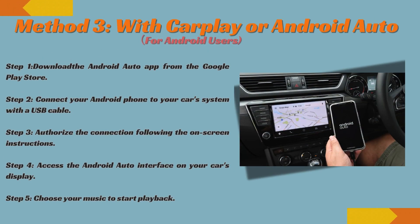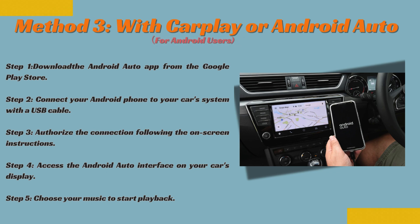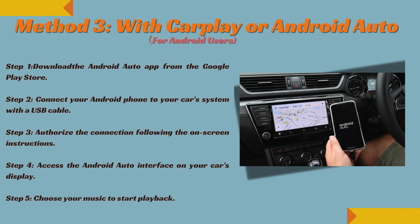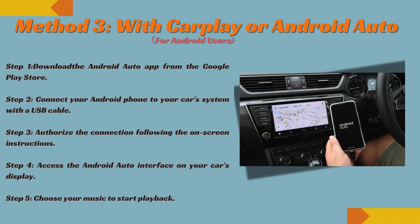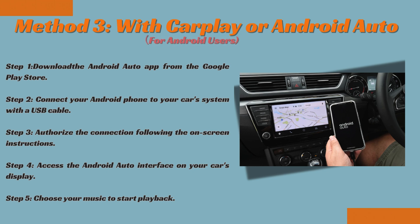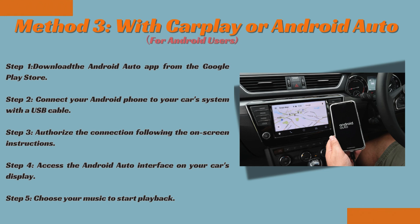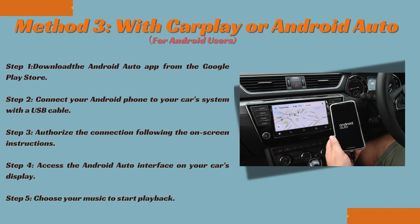For Android users — step one, download the Android Auto app from the Google Play Store. Step two, connect your Android phone to your car system with a USB cable. Step three, authorize the connection following the on-screen instructions. Step four, access the Android Auto interface on your car's display. Step five, choose your music to start playback. You can use your car's touchscreen, steering wheel controls, or voice commands to control Spotify playback while driving.